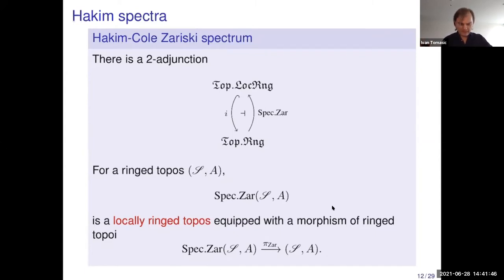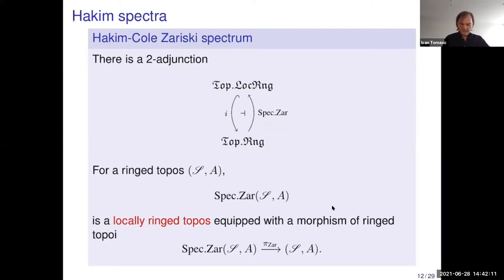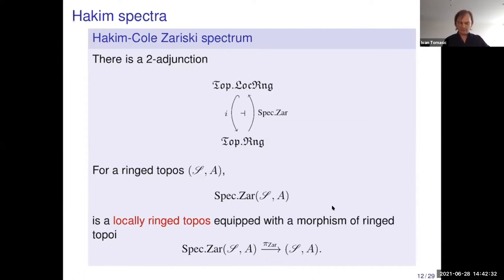Affine schemes are given in the relative case as Hakim spectra. Hakim proved that the two-inclusion from locally ringed toposes to ringed toposes admits a right adjoint, which she calls Spec_Zar, or the Zariski spectrum. For a ringed topos (S, A), the Zariski spectrum is a locally ringed topos equipped with the structure morphism of ringed toposes — called pi_Zar — to the original ringed topos. It's a sort of universal localization of a ring, but one that cannot be found in the same topos; you have to change the topos.